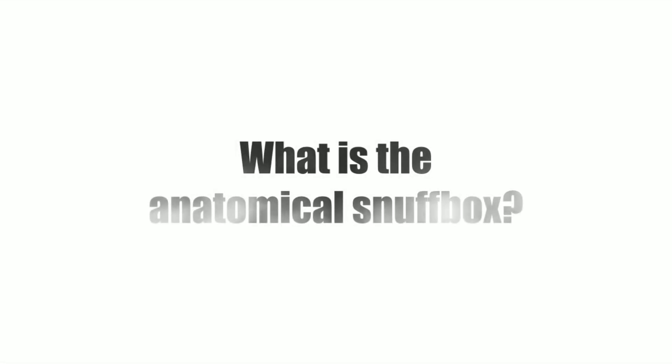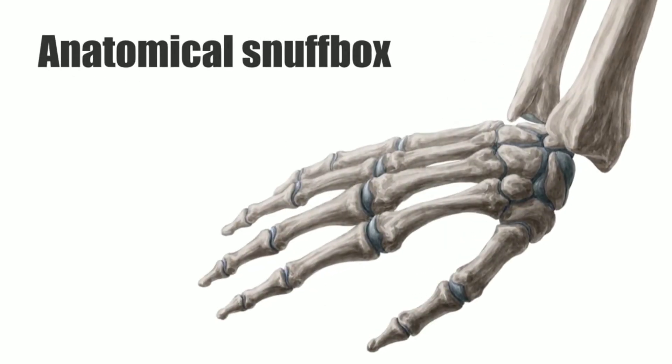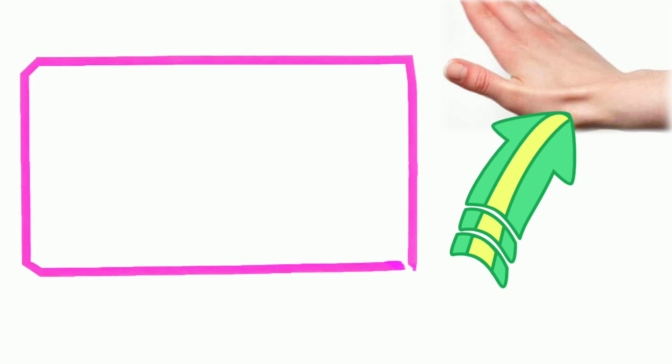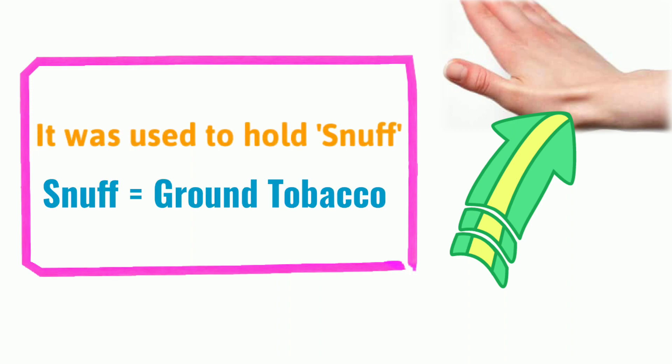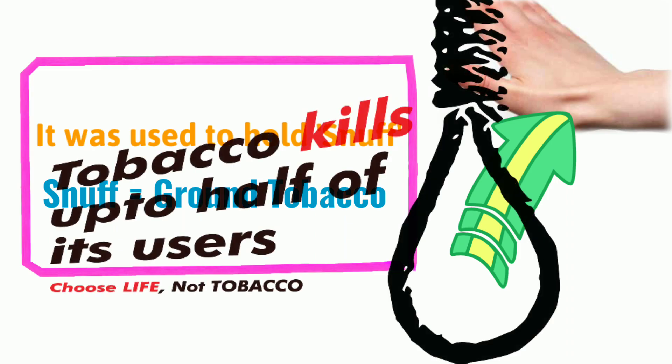The anatomical snuff box, also known as the radial fossa, is a triangular depression found on the lateral aspect of the dorsum of the hand. It is located at the level of the carpal bones and best seen when the thumb is extended. In the past, this depression was used to hold snuff — ground tobacco — before inhaling via the nose, hence the name snuff box.